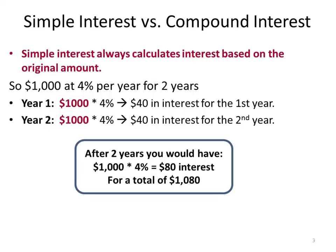Before we talk about these functions, I need to talk about the concept of simple interest versus compound interest. Simple interest always calculates the interest based on the original amount. For example, let's say we put $1,000 into a savings account at 4% per year for 2 years. Year 1, my $1,000 will yield $40 in interest. Year 2, that $1,000 will yield $40 in interest. So at the end of 2 years, I will have made $80 in interest and a total of $1,080 in my savings account.